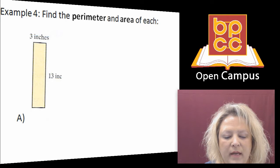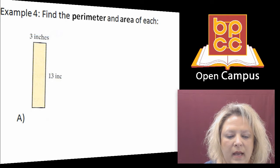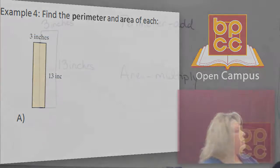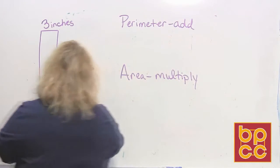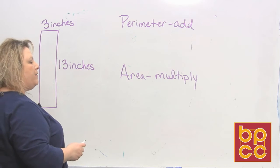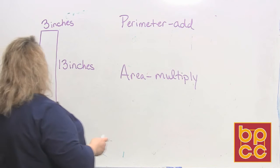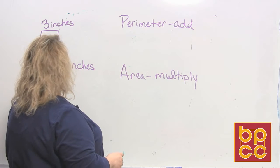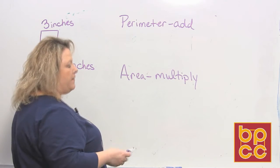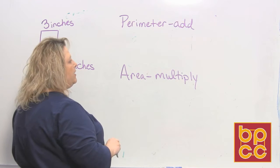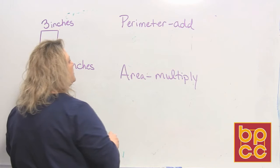Here's an example — we're going to find the perimeter and the area of each, and I'm going to do this one for you on the board. If you look at this, I drew a rectangle. First we're going to find the perimeter, which goes back to when we did the module on adding — perimeter means to add all the sides together.